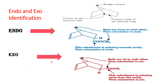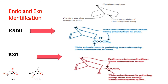We will clarify this by looking at some examples. This is an endo isomer — why? Because the substituent and the bridge carbon atom are trans to each other. And here, the substituent and bridge carbon atom are cis to each other, so it is an exo isomer.